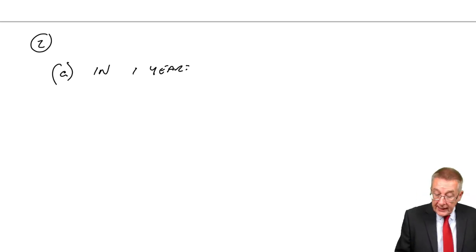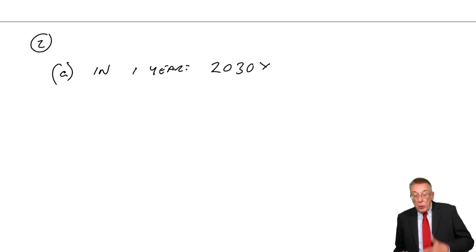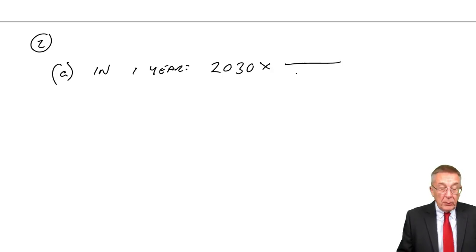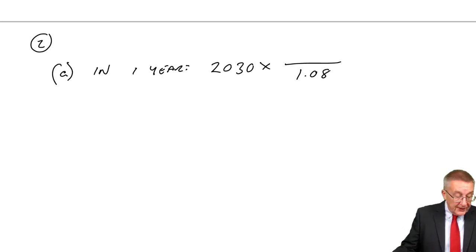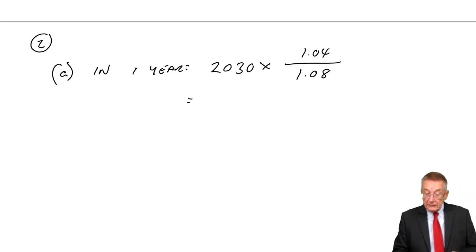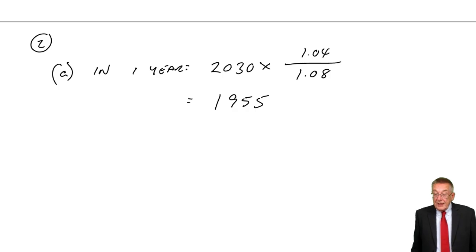First of all, in one year's time. S0, the current exchange rate, 2,030. At the moment, the quote is against the pound. One pound is 2,030 yen, so the pound is the base country. And so, divided by 1 plus HB, which UK is 8%. Japan's the other country, inflation 4%. The exchange rate in one year, you'd expect to be 1,955.